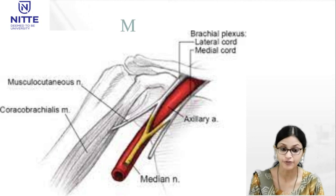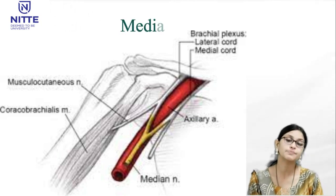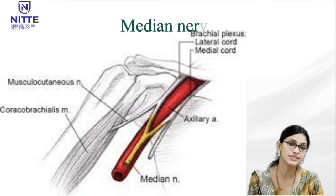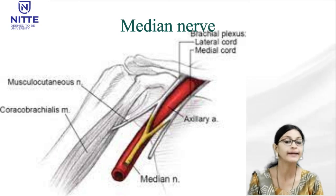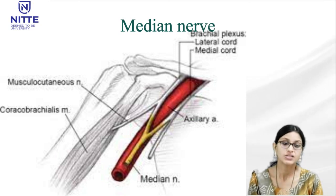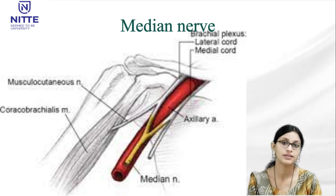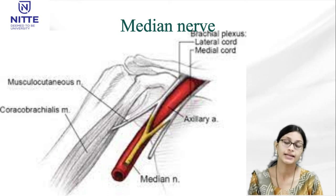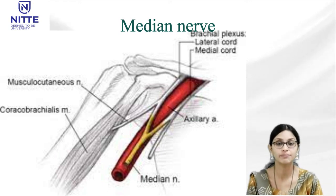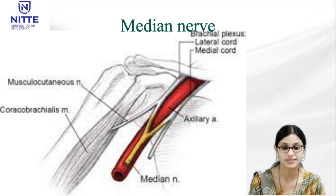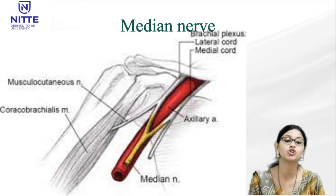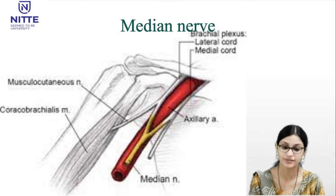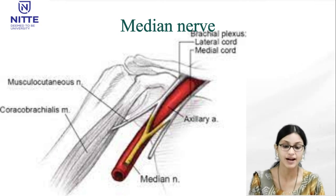The median nerve is contributed by branches from both the lateral cord and medial cord — it has two roots. The lateral root is a branch from the lateral cord and the medial root is a branch from the medial cord. The medial root joins with the lateral root after crossing the front of the third part of axillary artery, and the trunk thus formed descends on the lateral side of the axillary artery.